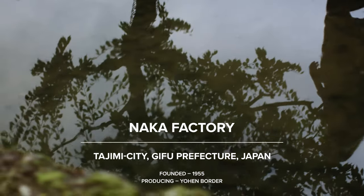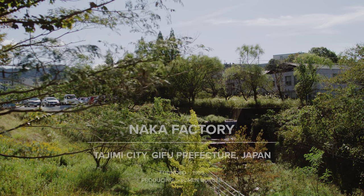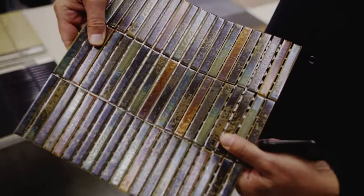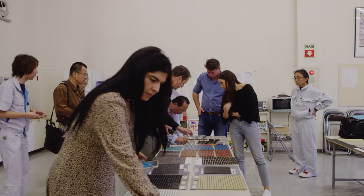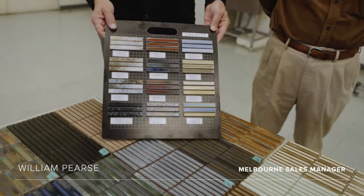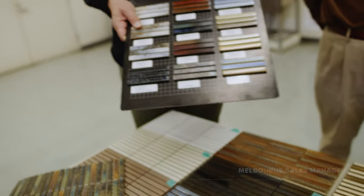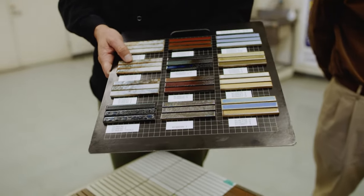We're in the Tajimi Valley at the Naka factory, which manufactures the product that Artadomus first sold from INAX, and it's the Yohin border range. They're glazes with clearly a Japanese, what I call, earthenware character.